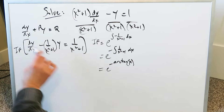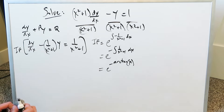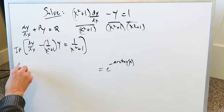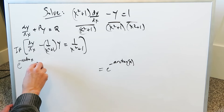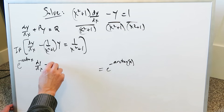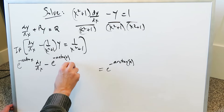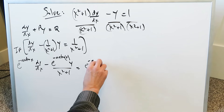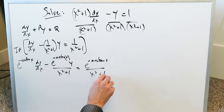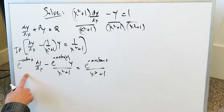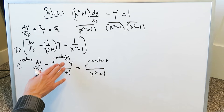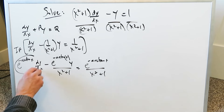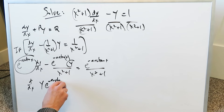The integration factor e to the minus arctan x will multiply with everything. Distributing across, you get e to the minus arctan x times dy/dx minus e to the minus arctan x times y over (x squared plus 1) is equal to e to the minus arctan x over (x squared plus 1). The left side is the derivative of y times e to the minus arctan x.